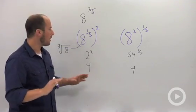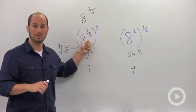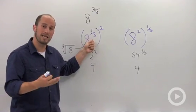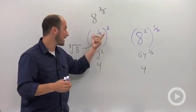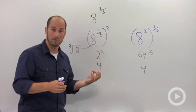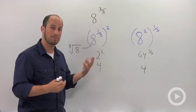In general, I will always go for this one first: do the root first. And why I do that is because our numbers are getting smaller. When we take the root of something, we're going to get smaller numbers. I like dealing with smaller numbers better than larger numbers.